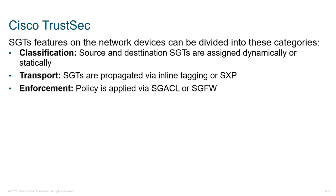We have to propagate those mappings throughout the environment, so security group tags have to be propagated between devices. A lot of times we set these up within Cisco ISE and then leverage the security group tag exchange protocol, or SXP, to propagate that data out to our various devices. Once these tags are enforced, we can also apply a security group ACL or a security group firewall to our traffic based on these flows.